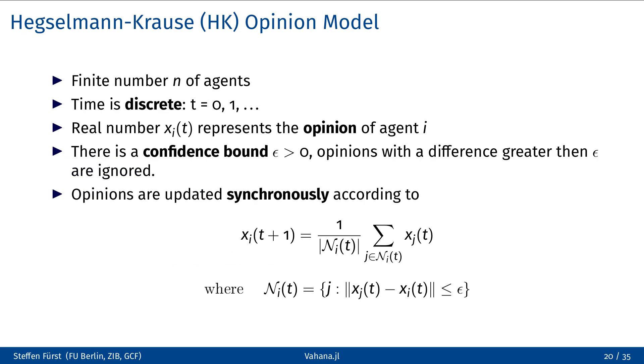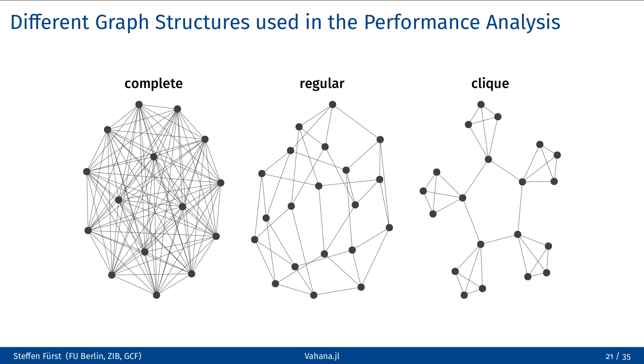We will use the well-known Hegselmann-Krause opinion model for this analysis. The Hegselmann-Krause model is a mathematical model for opinion dynamics, simulating how individual opinions within a group evolve over time based on social influence. Typically, all agents are connected, forming a complete graph, but in the following we want to understand how different graph structures can impact both performance and scalability. Therefore, we consider two additional graph structures, namely regular graphs, where each vertex has the same number of edges, and clique graphs, which consist of numerous equal-sized cliques, where only a single vertex from each clique is connected to the neighboring cliques.